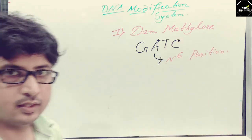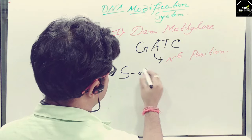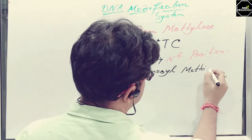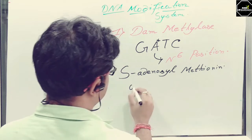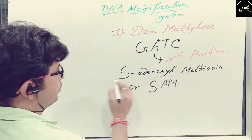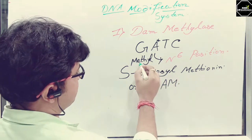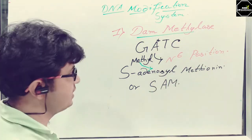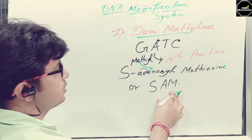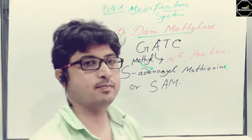Now, how it is methylated? Actually, this enzyme is transferring S-adenosyl methionine or SAM. Here it transfers the methyl group. The DAM methylase is an enzyme which takes the methyl group from S-adenosyl methionine or SAM and transfers it to the N-6 position of adenine residue in G-A-T-C sequence. This is done by this enzyme.